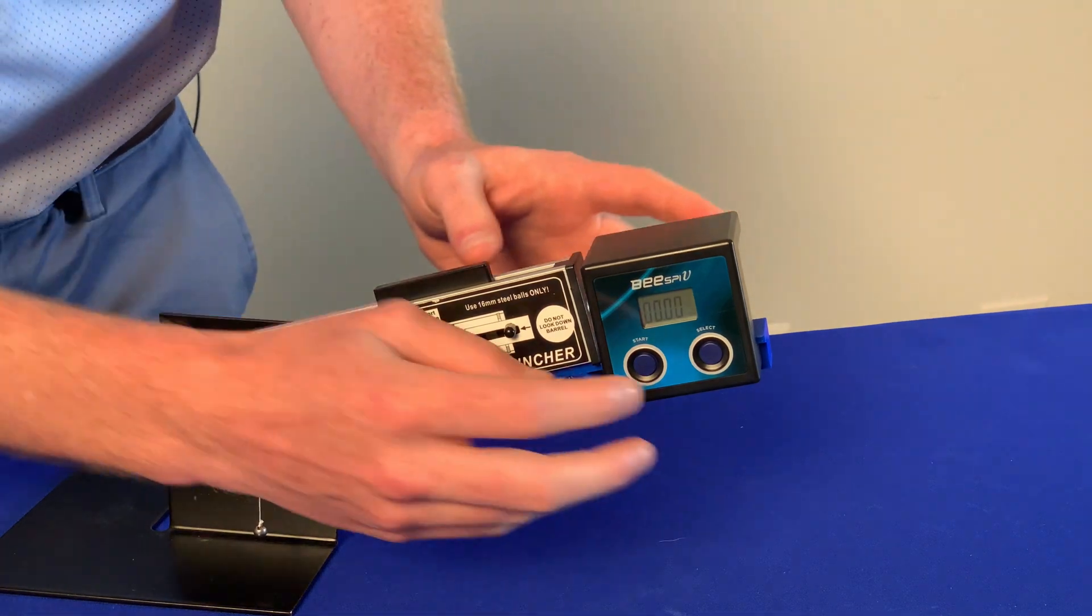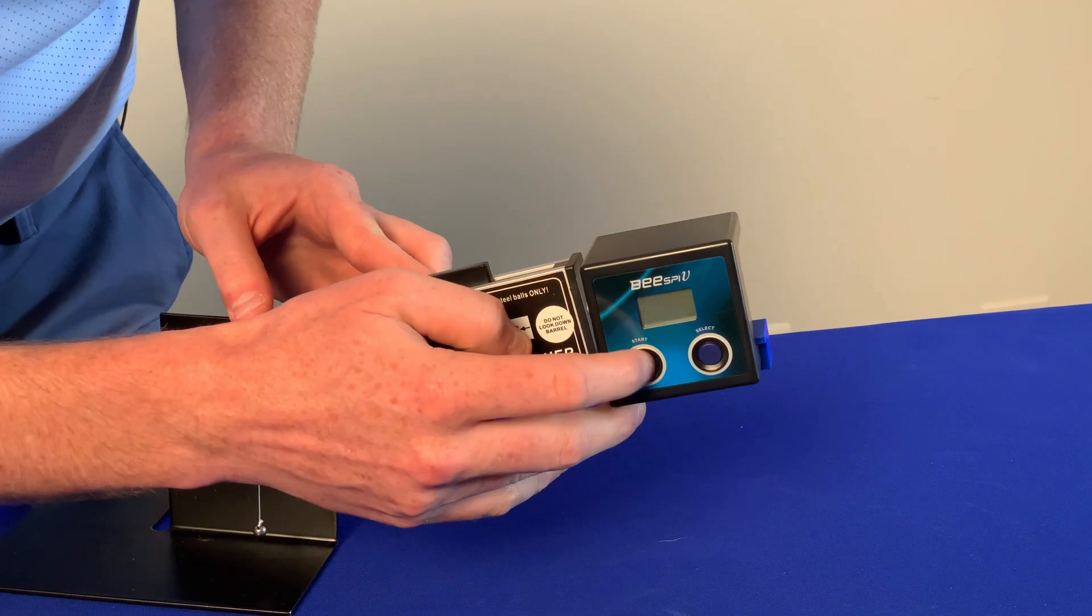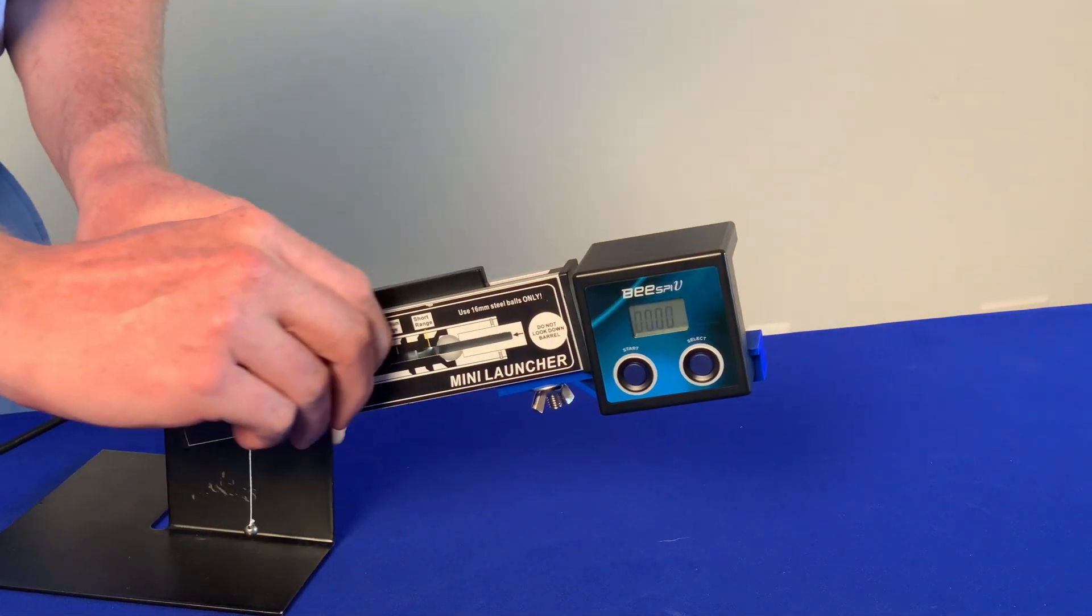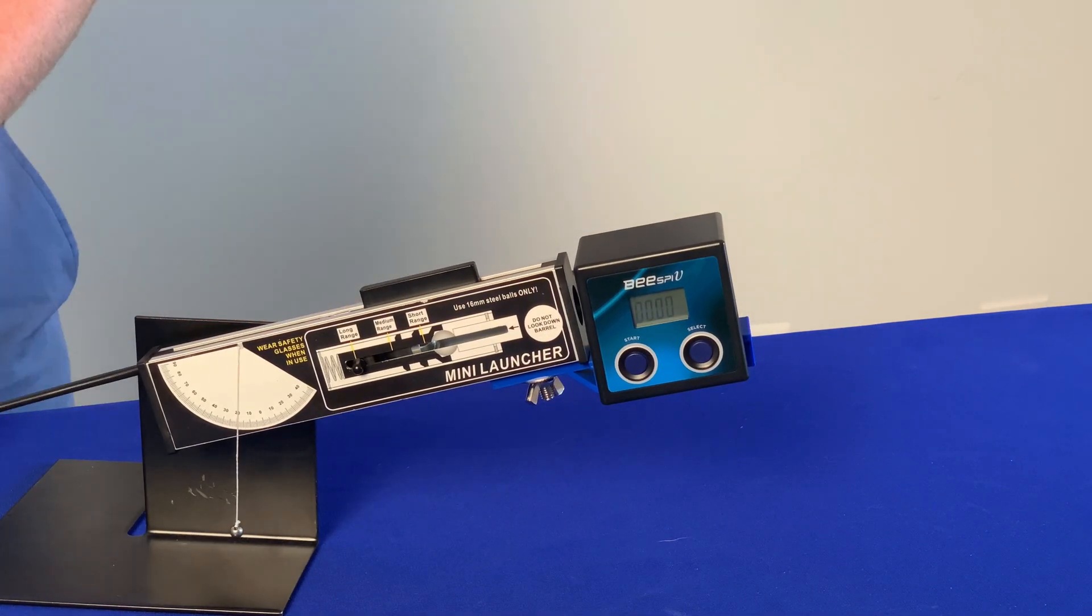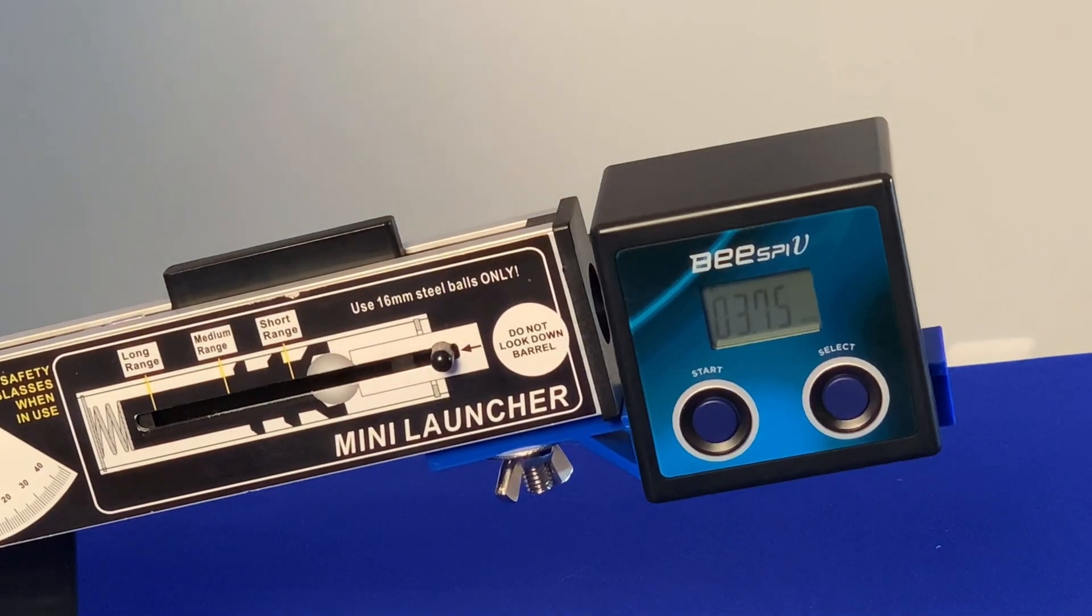So let's load up our artillery get that reset there pull it on back and let it rip. What a launch and we got a reading of 3.75 meters per second.